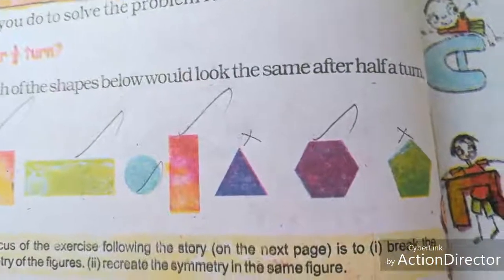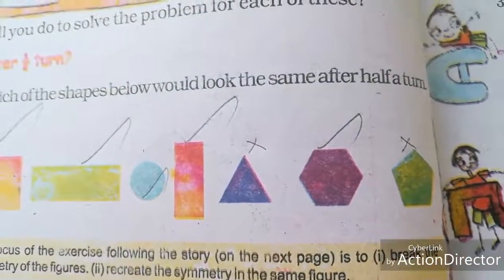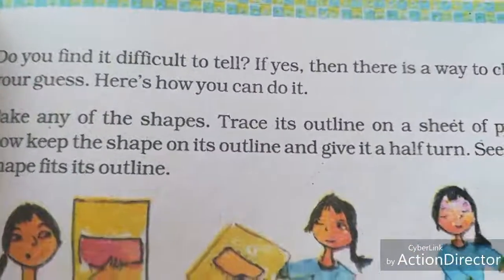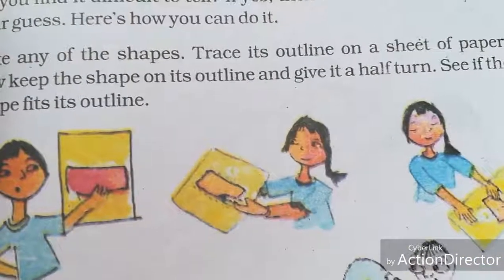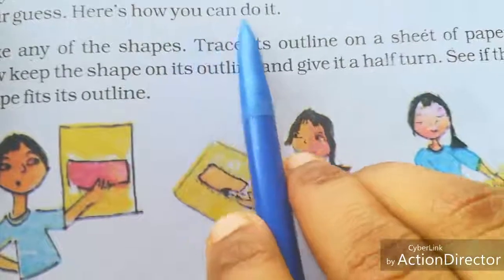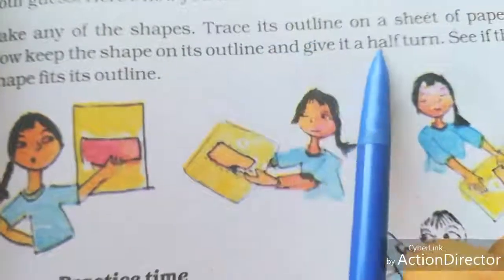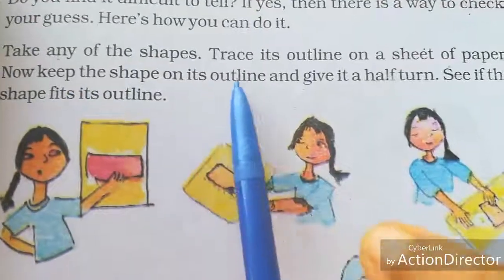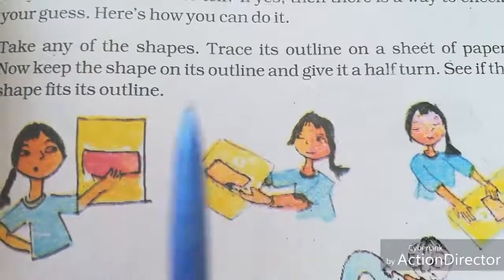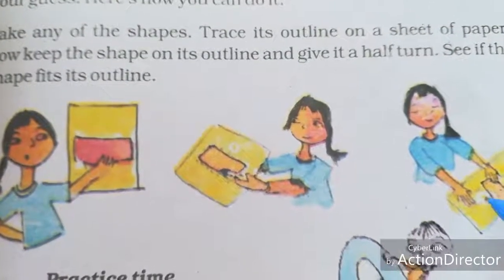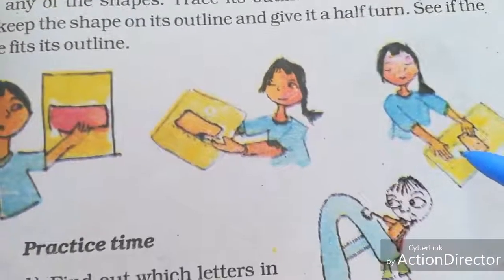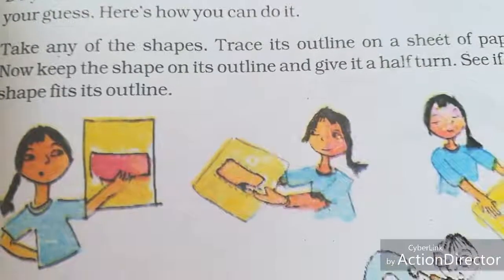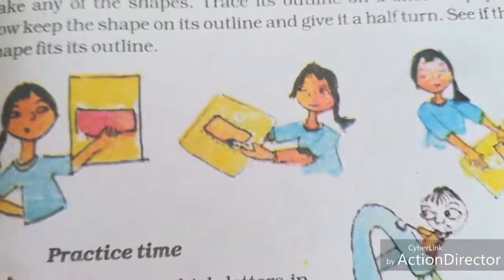So you also make some shapes and look at the half turn — whether it is the same or not. Do you find it difficult to tell? There is a way to check your guess. First you take any shape, trace its outline on a sheet of paper. Now keep the shape on its outline and give it a half turn. 1/4 of the turn, then next half a turn — it will come in the same position. If the shape fits in the outline, that is the half turn — the shape will look the same after a half turn.